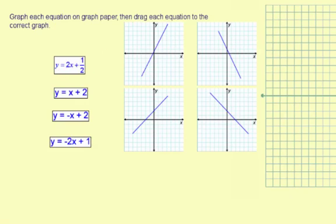y equals 2x plus 1 half, and we're using the y equals mx plus b, or the slope-intercept graphing method.